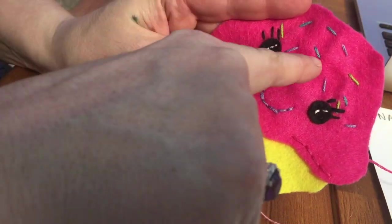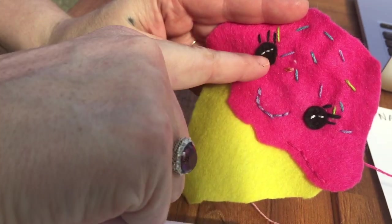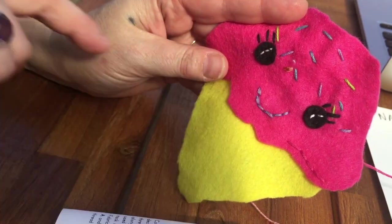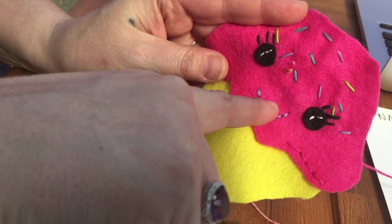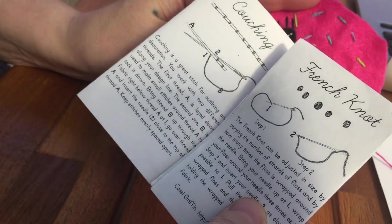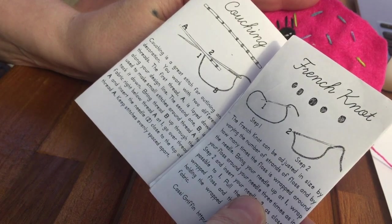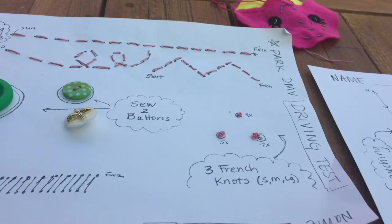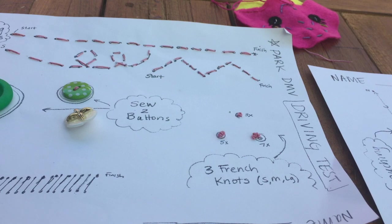This is something my daughter sewed—she made little lines to make sprinkles. But if I wanted a freckle or a little teeny button, or a tiny nose that I didn't have a small enough button for, I could make a French knot. So I'm going to show you how to make a French knot.